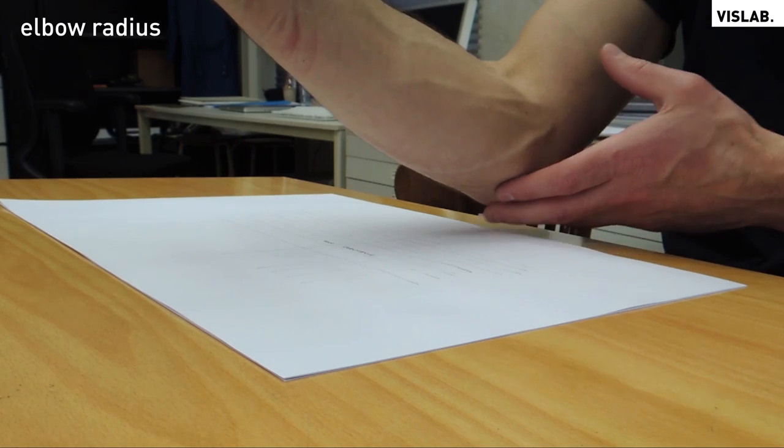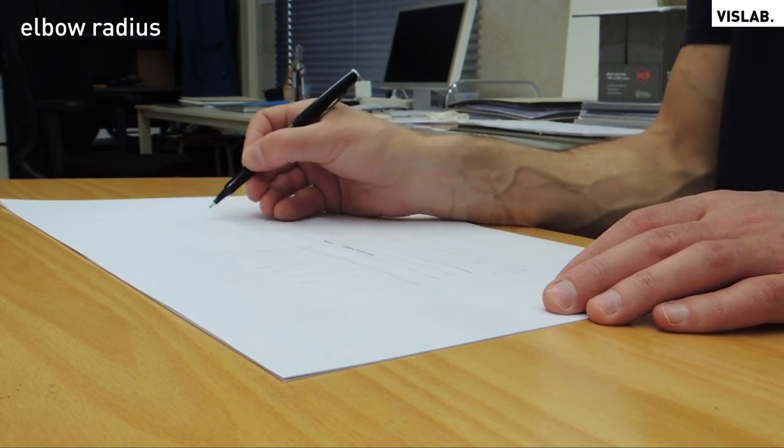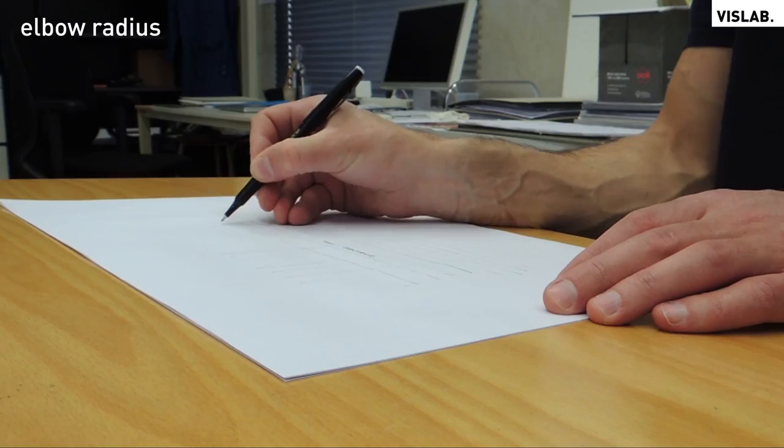The same goes for your elbow. If you rotate your arm around your elbow, you create a curve with a radius the size of your lower arm.